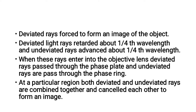When these rays enter into the objective lens, deviated rays pass through the phase plate and undeviated rays are passed through the phase ring. Both deviated and undeviated rays are then combined together and cancel each other to form an image.